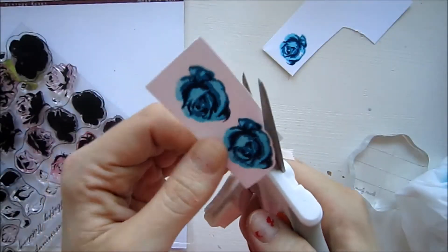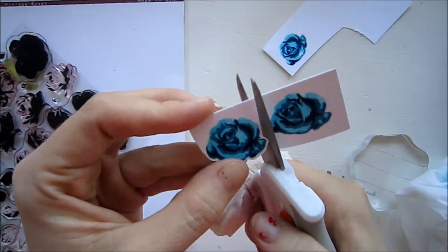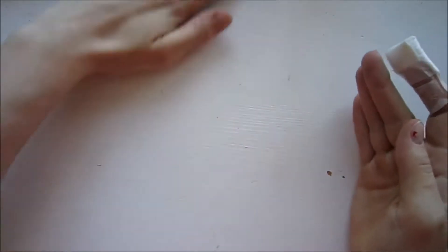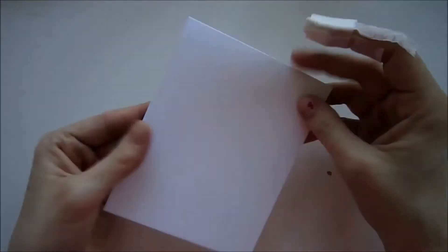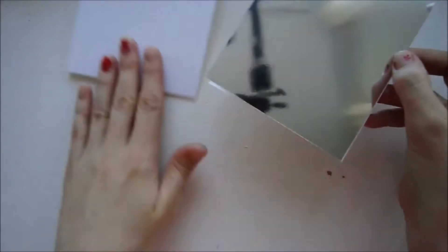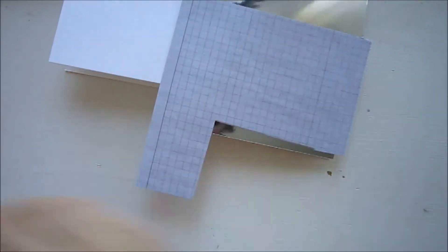I'm just fussy cutting this out with my scissors and this is a really easy image to fussy cut out. I also did the same process with a couple of the leaves from the same stamp set and I left that out of this video.